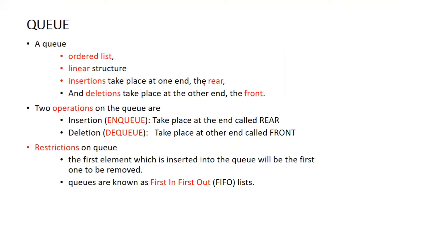Insertion takes place at the rear end. Deletion operation occurs at the front end. The two operations on the queue are insertion and deletion. Insertion is also known as enqueue and deletion is also known as dequeue. In enqueue, insertion takes place at the rear end, and dequeue takes place at the front end. The first element inserted into the queue will be the first one removed.